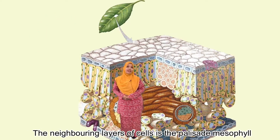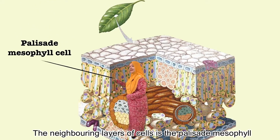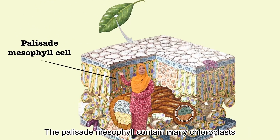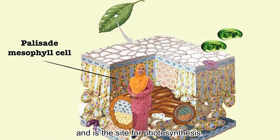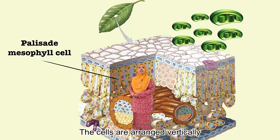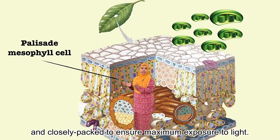The neighboring layer of cells is the palisade mesophyll. The palisade mesophyll contains many chloroplasts and is the site for photosynthesis. The cells are arranged vertically and closely packed to ensure maximum exposure to light.